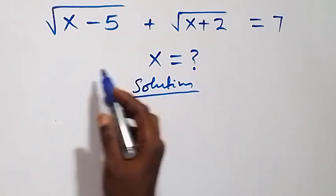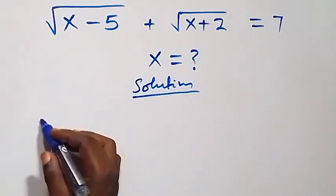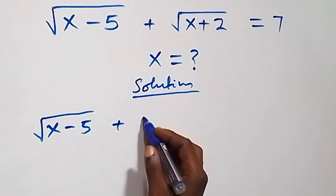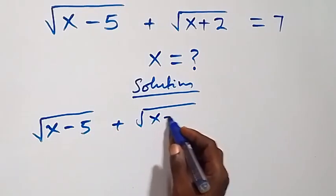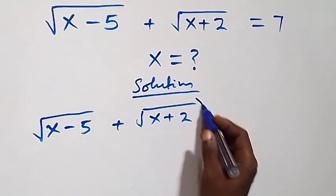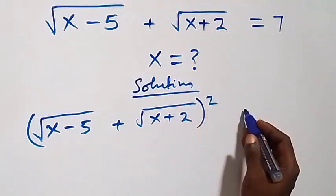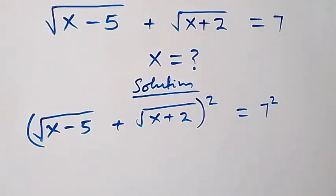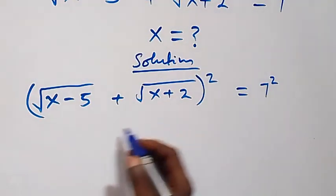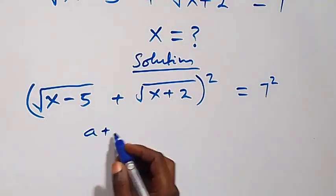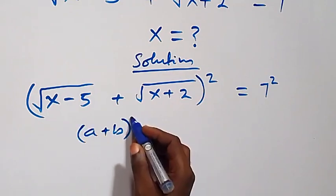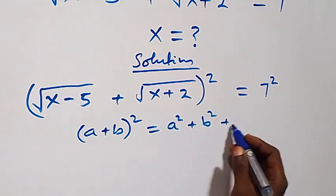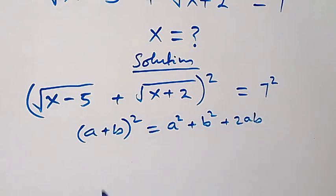We can take the square on both sides directly. Here we have square root of x minus 5 plus square root of x plus 2, all squared on this side, then equals to 7 squared on this side. This follows from (a + b) squared, which is the same thing as a squared plus b squared plus 2ab.